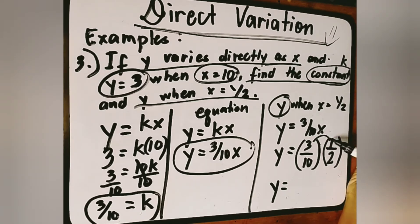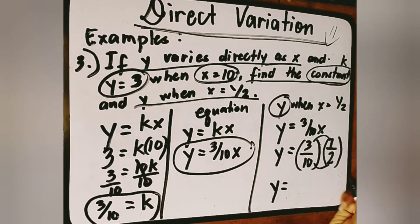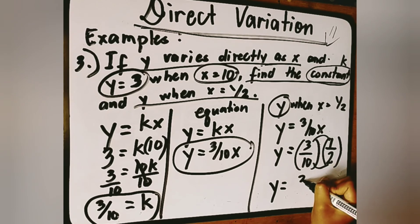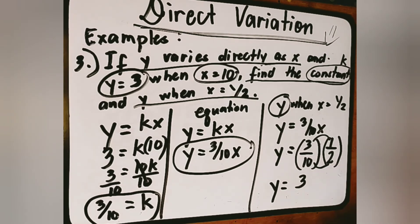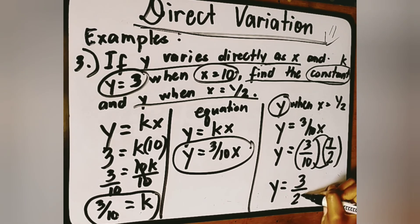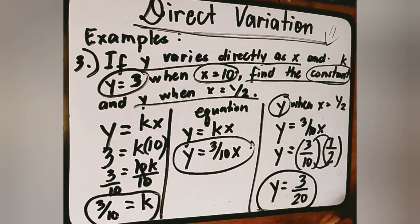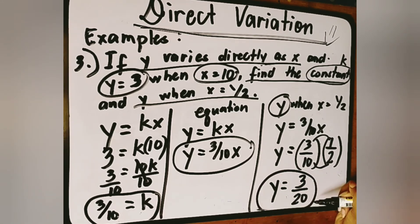Using the equation y is equal to (3/10)x, substitute x is equal to 1 half. Multiply numerator by numerator: 3 times 1 equals 3. Multiply denominator by denominator: 10 times 2 equals 20. So we have the value of y, which is 3 over 20.